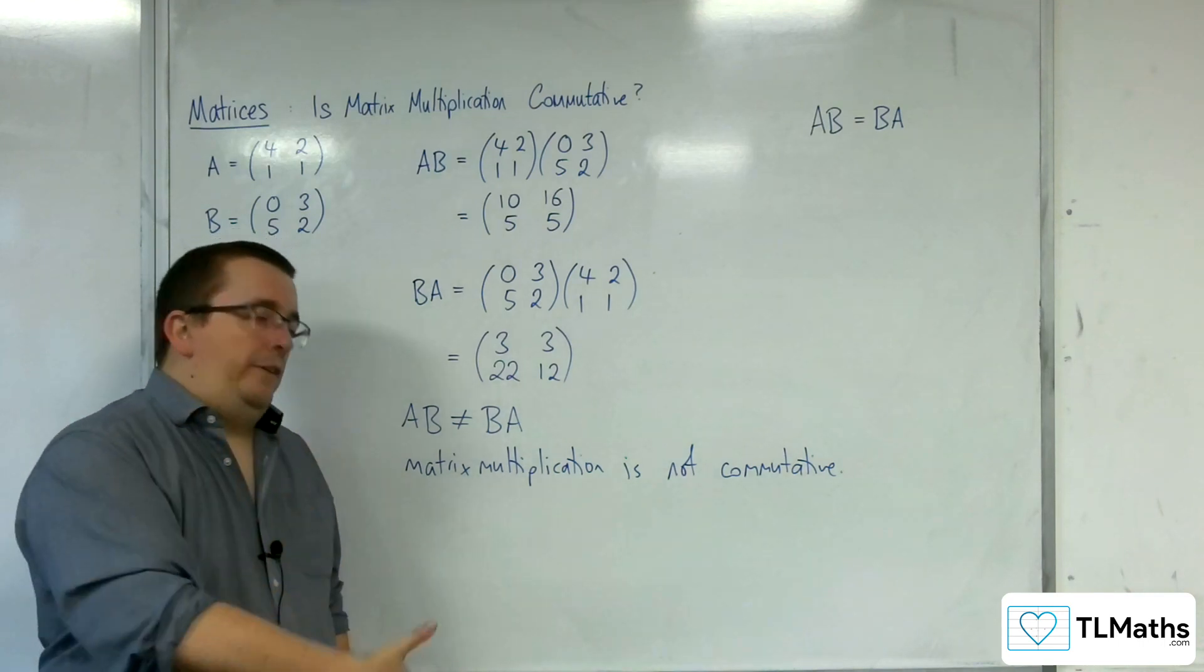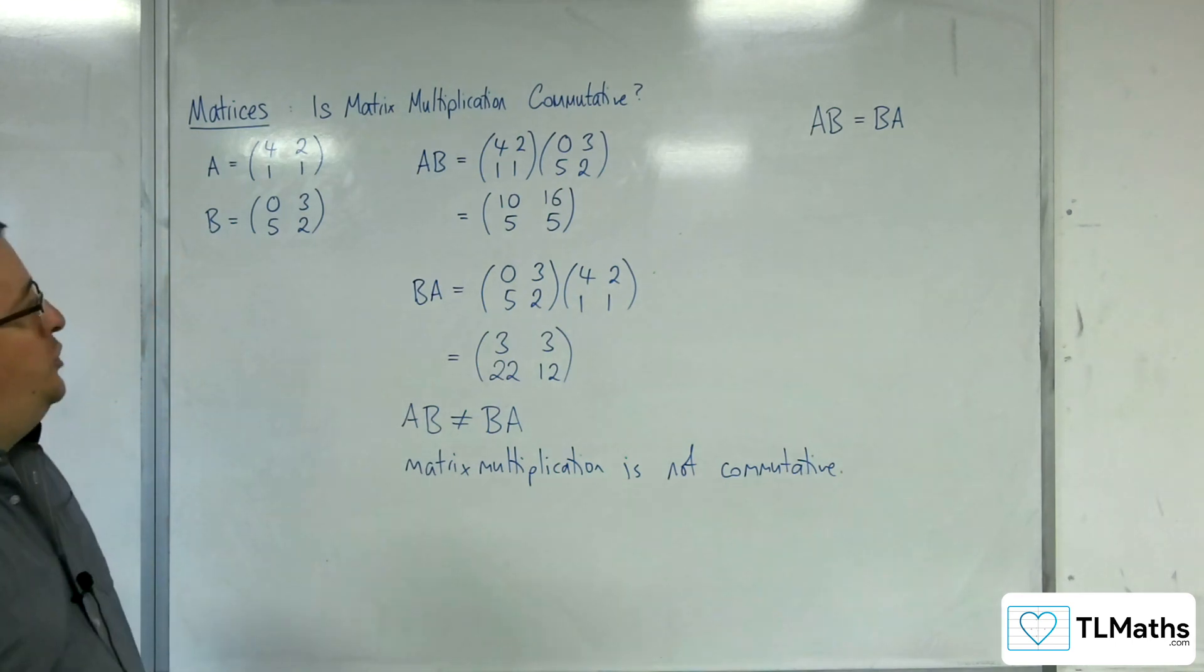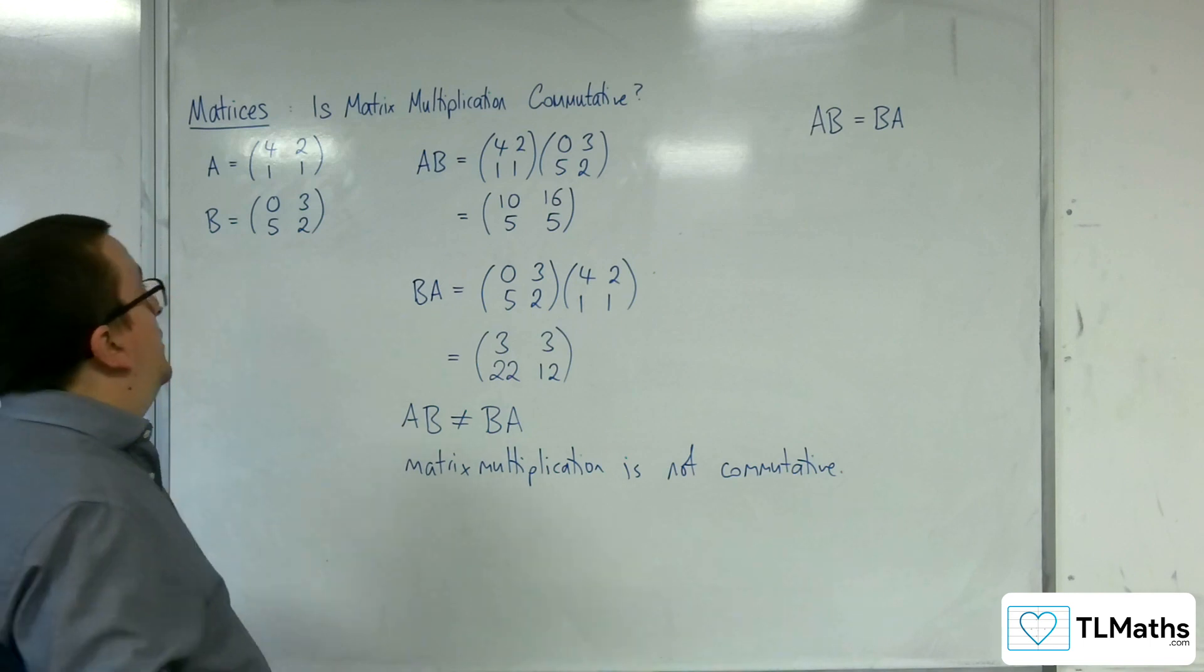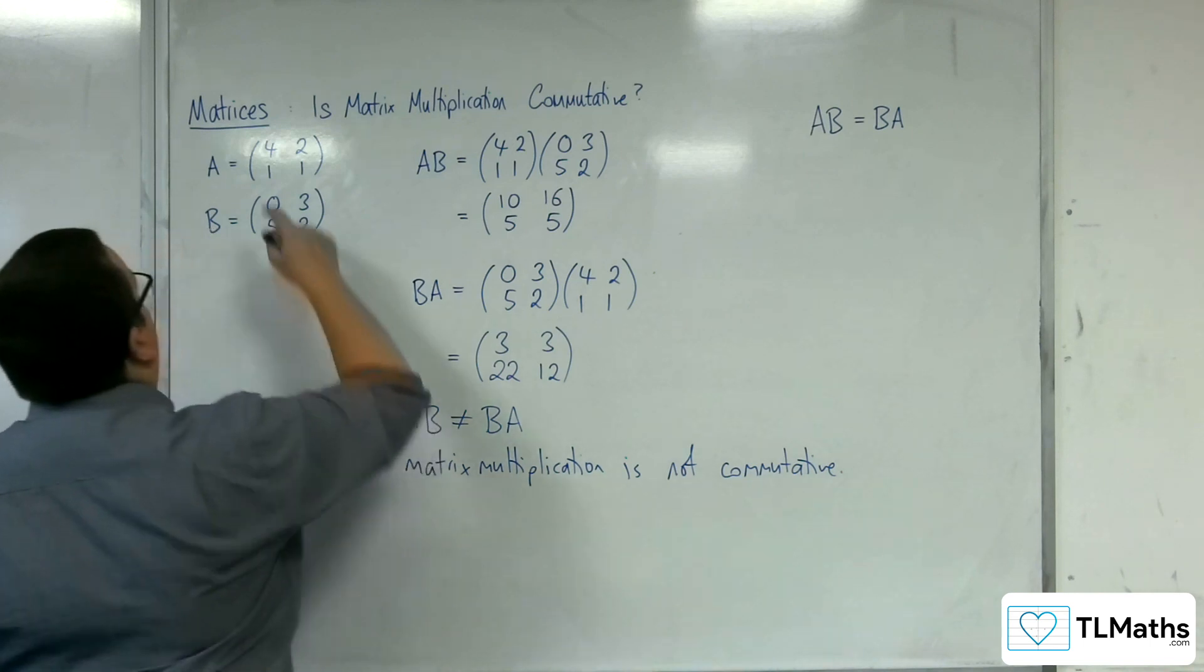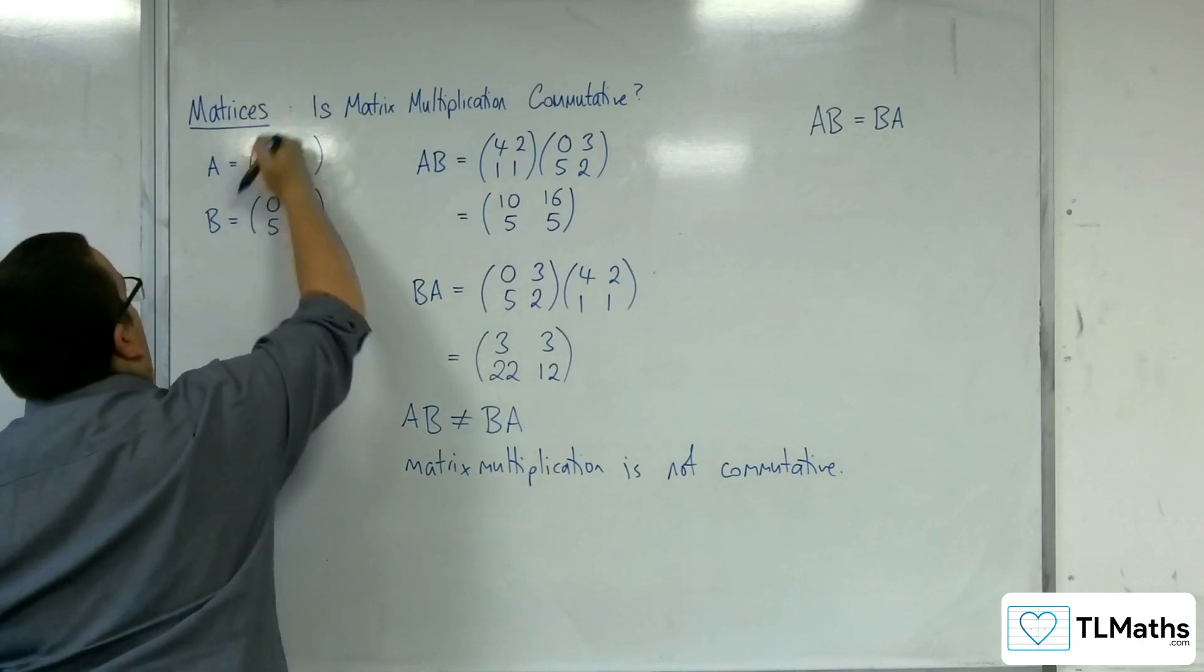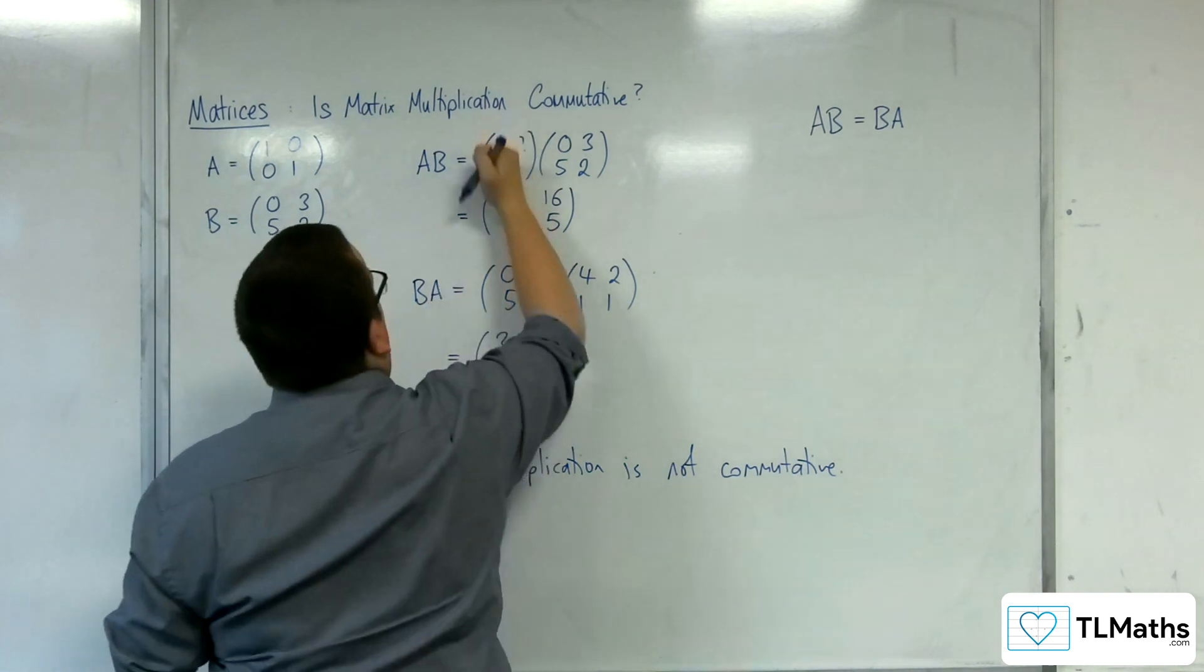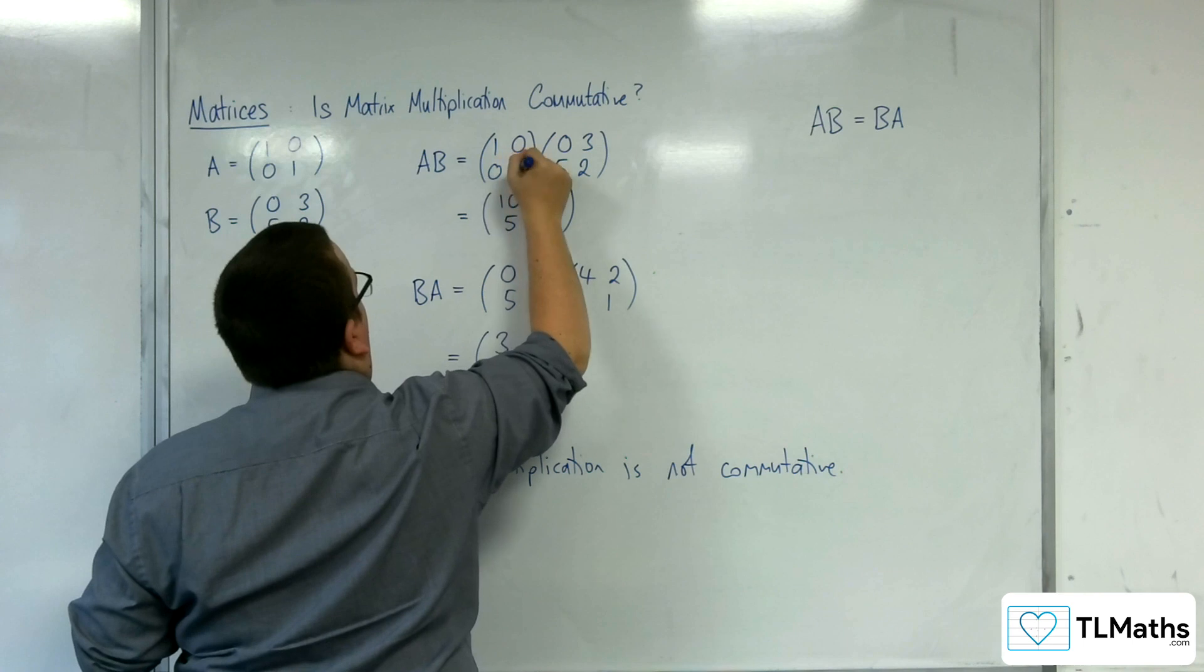Now, although we got a different result in this example, I could have changed one of these matrices to be like the identity matrix, for example. So if I'd changed A to be (1,0; 0,1).